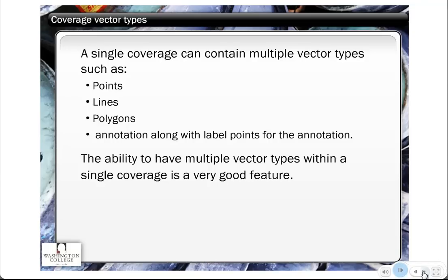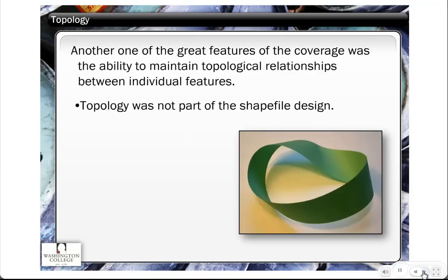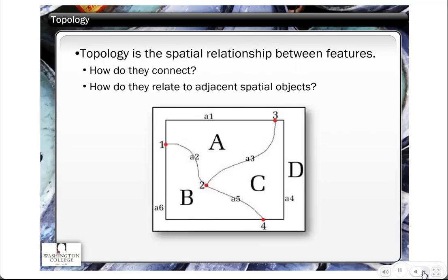The ability to have multiple vector types within a single coverage is a very useful feature. There were also some topology-related capabilities that a coverage had that were extremely useful. Topology is really something that allows you to maintain spatial relationships between different features. This diagram shows three polygons — polygon A, B, C — and D would be exterior. Topology is the spatial relationship between these different spatial features. They share common borders and common vertices, and this information is important to capture within a GIS.